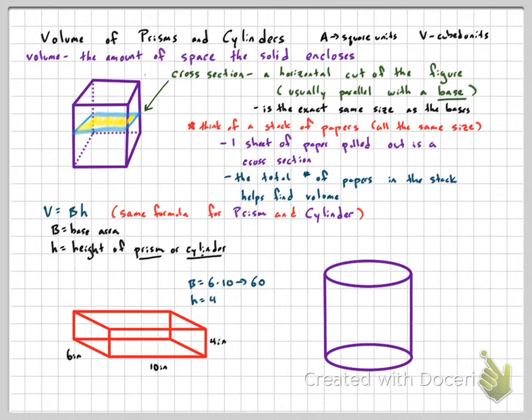Our height is given to us at 4 inches. So all we do then, volume equals area of the base times the height. So our volume is 240 inches cubed. That's it. That's all that you have to do. Again, it's the area of the base times the height.